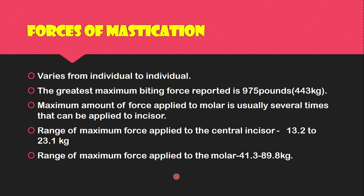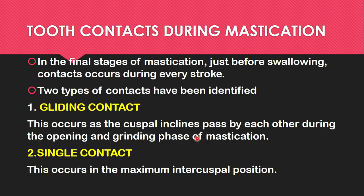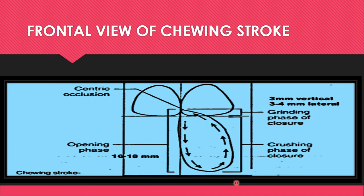The forces of mastication vary from individual to individual. The greatest maximum biting force reported is 975 pounds or 443 kg. The maximum amount of force applied to the molars is several times that applied to the incisors. The range of maximum force at the central incisor is 13.2 to 23.1 kg, and for molars it is 41.3 to 89.8 kg. The average length of time for total tooth contact during mastication is 194 milliseconds. Tall and deep fossae promote vertical chewing strokes, whereas flat and worn-out teeth encourage broader chewing strokes. Chewing harder food substances creates broader and wider chewing strokes.